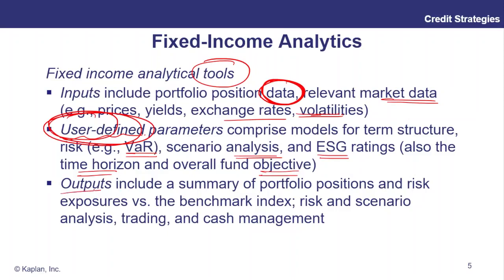The output will be an asset allocation summary — both what we should allocate to over the long term and how our portfolio is actually allocated — our risk exposures versus our neutral benchmark position, and the outputs of risk and scenario analysis, plus a summary of trading and our cash management process. This would be the output of a fixed income analytics system, telling you how you're getting on, where your big risk exposures are, what worked and what didn't work versus your neutral benchmark portfolio, and what trades you've done and their impact in a particular time period.